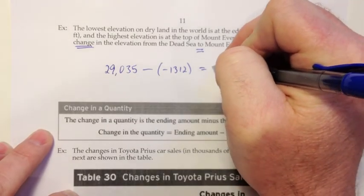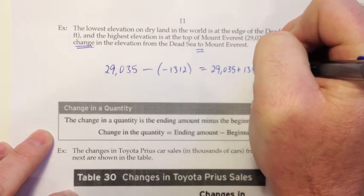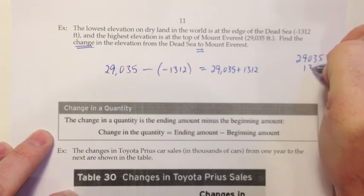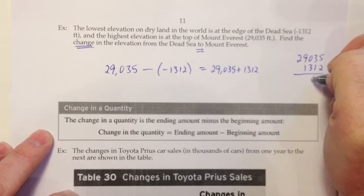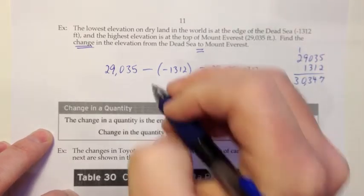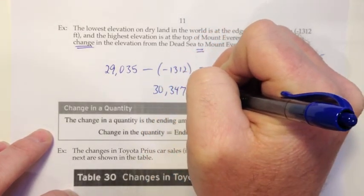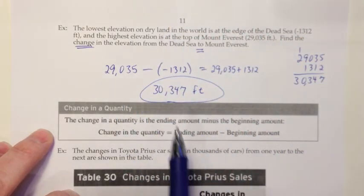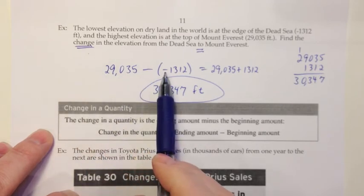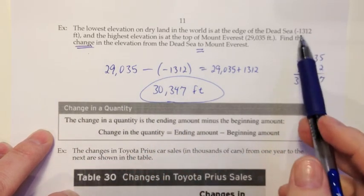So let me do the addition over here on this side as scratch work. Actually, let's rewrite it. It's 29,035 plus because of the two negatives, 1,312. And now I'm going to do that scratch work. So it looks like the change in elevation would be 30,347 feet. And again, be really careful. One subtraction because of the word change. And then this negative because that was the beginning elevation was itself negative.